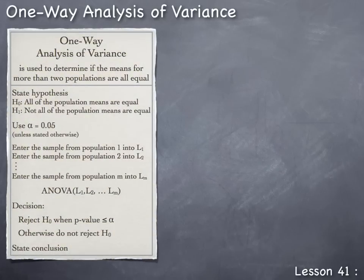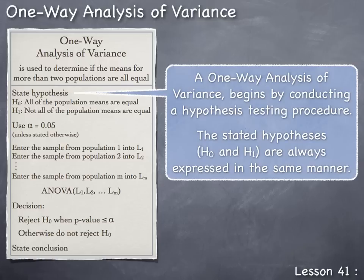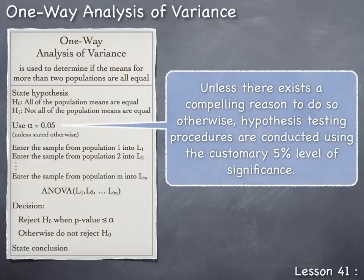Here is the guide we can follow when conducting a one-way analysis of variance. It begins by conducting a hypothesis testing procedure. The first step is to state the hypotheses. H₀ and H₁ are always expressed the same way: H₀ is that all of the population means are equal, and H₁ is that not all the population means are equal. Unless there is a compelling reason otherwise, hypothesis testing procedures are conducted using the customary 5% level of significance, or α = 0.05.